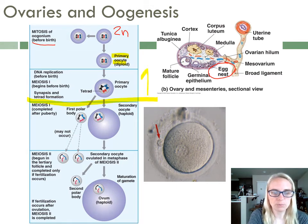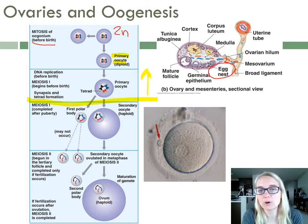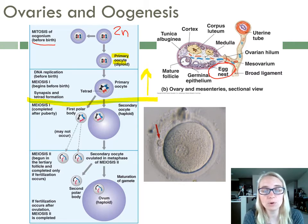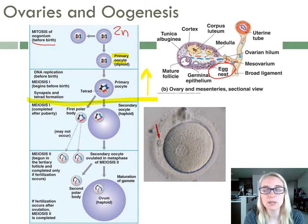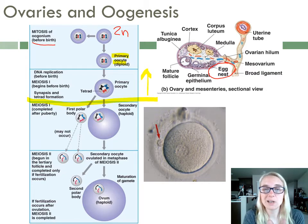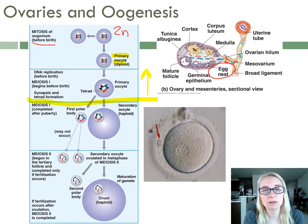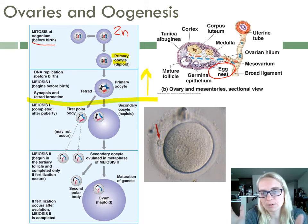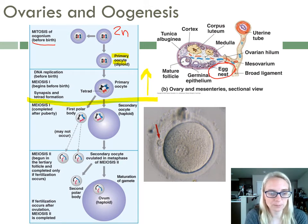All before birth — we get all of our primary oocytes made. All the oogonium are converted to primary oocytes, so we lose any stem cells. Then those primary oocytes go through DNA replication. Homologues find each other, they're synapsed, they're paired up, they might be doing their crossing over. So the primary oocyte is diploid and it's the diploid stem cell that's going to make your oocytes.